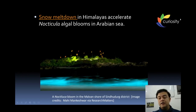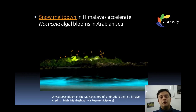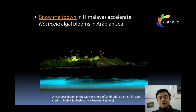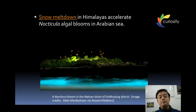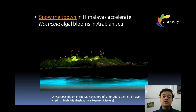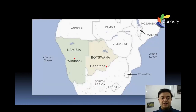I covered this bioluminescent bloom in 'Curiosity,' a monthly science show on my YouTube channel. The reason for this Noctiluca bloom is now thought to be connected to snow meltdown in the Himalayas — Himalayan snow meltdown is linked to algal blooms in South India. A new paper published a few months back says this snow meltdown in the Himalayas accelerates Noctiluca algal blooms in the Arabian Sea.